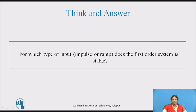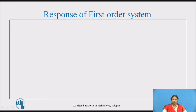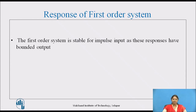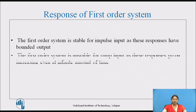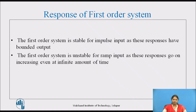Try to think and answer: for which type of input — impulse or ramp — is the first-order system stable? Pause the video and note down the answer. The first-order system is stable for impulse input, as these responses have bounded output, whereas the first-order system is unstable for ramp input, as these responses go on increasing even at an infinite amount of time.